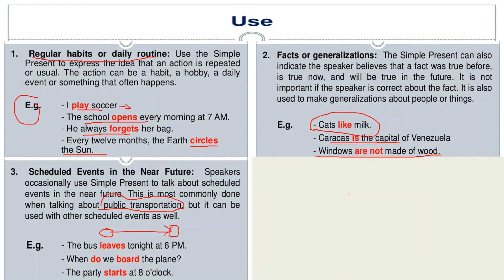Here are three examples: 'The bus leaves tonight at 6 PM.' That means the bus leaves every night at 6 PM. 'When do we board the plane?' That means it is a near future scheduled event — when are we going to board the plane? 'The party starts at 8 o'clock.' That is also about the near future. It is a scheduled event that is surely going to start at 8 o'clock.